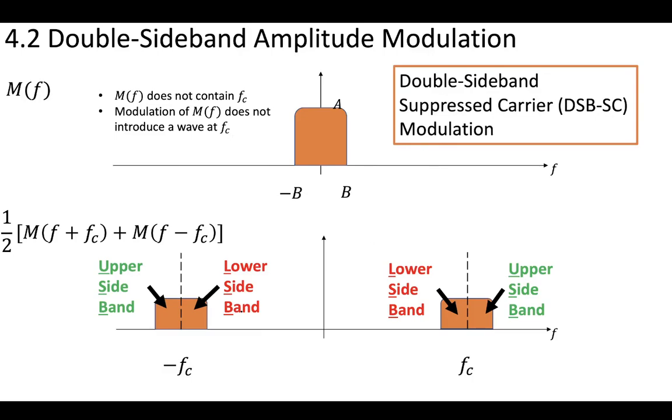So because of that, we'll say that this is double sideband, meaning we have the upper sideband and the lower sideband. And also, we aren't introducing this fc, so the carrier is suppressed. Now, this is a bit of a mouthful, but we'll call this double sideband suppressed carrier modulation, and you'll see it abbreviated as DSB-SC.